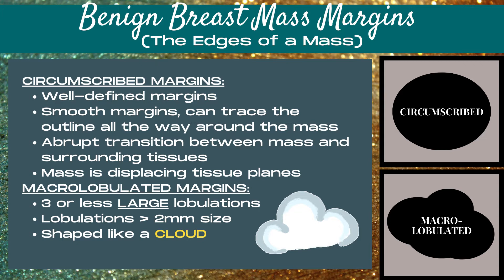Next, we have macro lobulated margins. This is when a mass has three or less large lobulations. Lobulations are rounded projections from a mass, and these are lobulations that are greater than two millimeters in size.